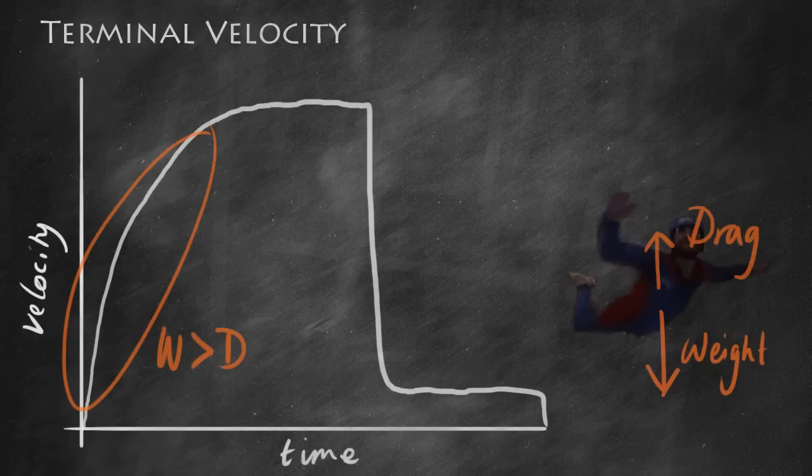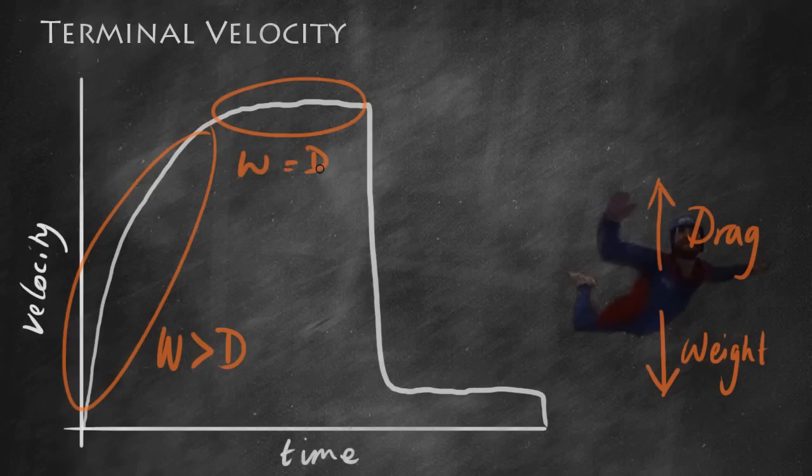As we accelerate, we're going to reach a point at which drag becomes equal to weight. Now this is this situation here at the top where we've reached what we call terminal velocity where the weight equals the drag. So according to Newton's first law here we've got no resultant force so we've got no acceleration. We've got a steady speed, a constant speed. It's a very high constant speed at this point but the body is not accelerating.